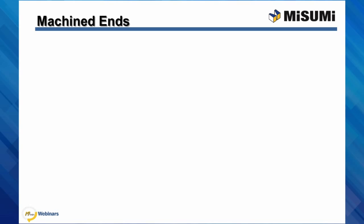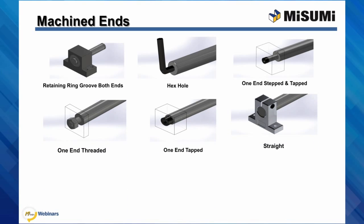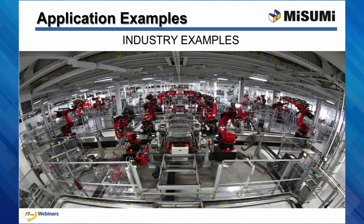Here are some examples of different shaft ends: retaining ring grooves for bearing housings, hex holes for hex keys, one end threaded or tapped for mounting, straight for standard shaft supports, two tap holes for anti-rotation, one end tapered for locating purposes, and one end stepped to reduce housing sizes.